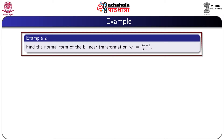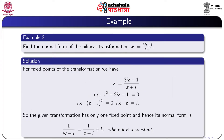Another example: Find the normal form of the bilinear transformation W equal to (3Iz plus 1) by (Z plus i). For fixed points of this transformation we have W equal to Z, that is Z equal to (3Iz plus 1) by (Z plus i). This gives Z squared minus 2Iz minus 1 equal to 0, that is (Z minus i) squared equal to 0, that is Z equal to i. That means this transformation has only one fixed point. So its normal form is 1 by (W minus i) equal to 1 by (Z minus i) plus K, where K is a constant, and this is obviously a parabolic transformation.